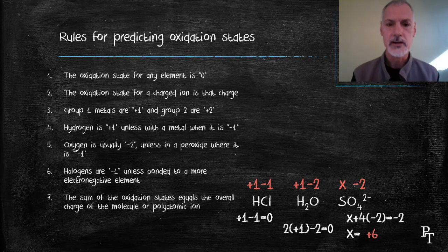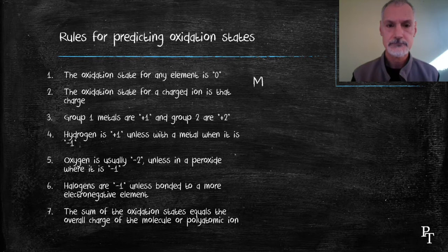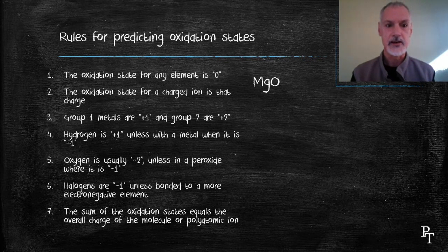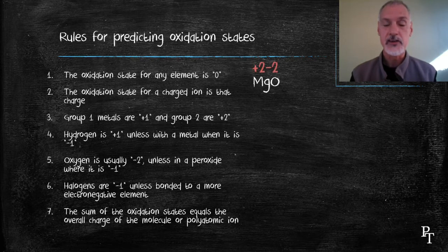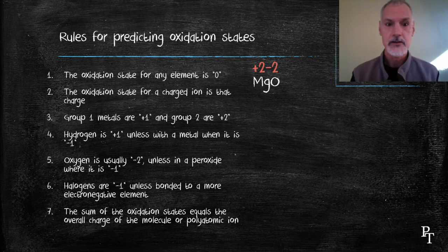Let's look at a few more examples and see how these rules apply. First off, magnesium oxide. I can look at the rules. Rule number three gives me that magnesium is plus two, and rule number five gives me that oxygen is minus two. And also rule seven says the total charge has to be zero. So magnesium must be plus two and oxygen must have a state of minus two.